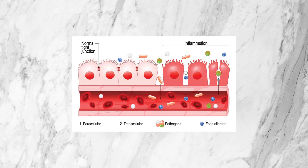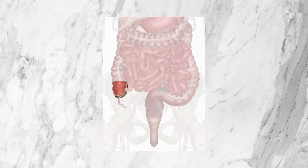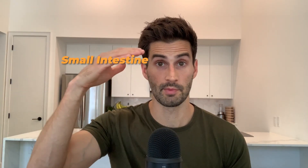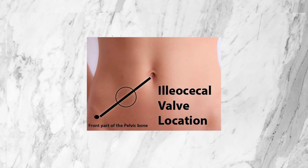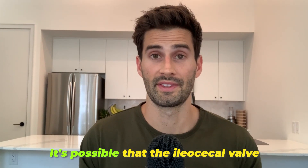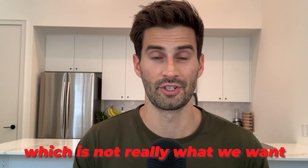The third problem that can lead to SIBO is a leaky ileocecal valve. This is not to be confused with leaky gut, which is when the cells lining your small intestine become spaced apart, causing inflammation and other problems. The ileocecal valve separates the small intestine from the large intestine and is meant to be a one-way valve, allowing substances to travel only from the small intestine into the large intestine. It's located halfway between your belly button and your right hip bone. If you notice tenderness when you press firmly with a few fingers on that area and rotate them around, or hear constant gurgling, it's possible the ileocecal valve is stuck in an open position.